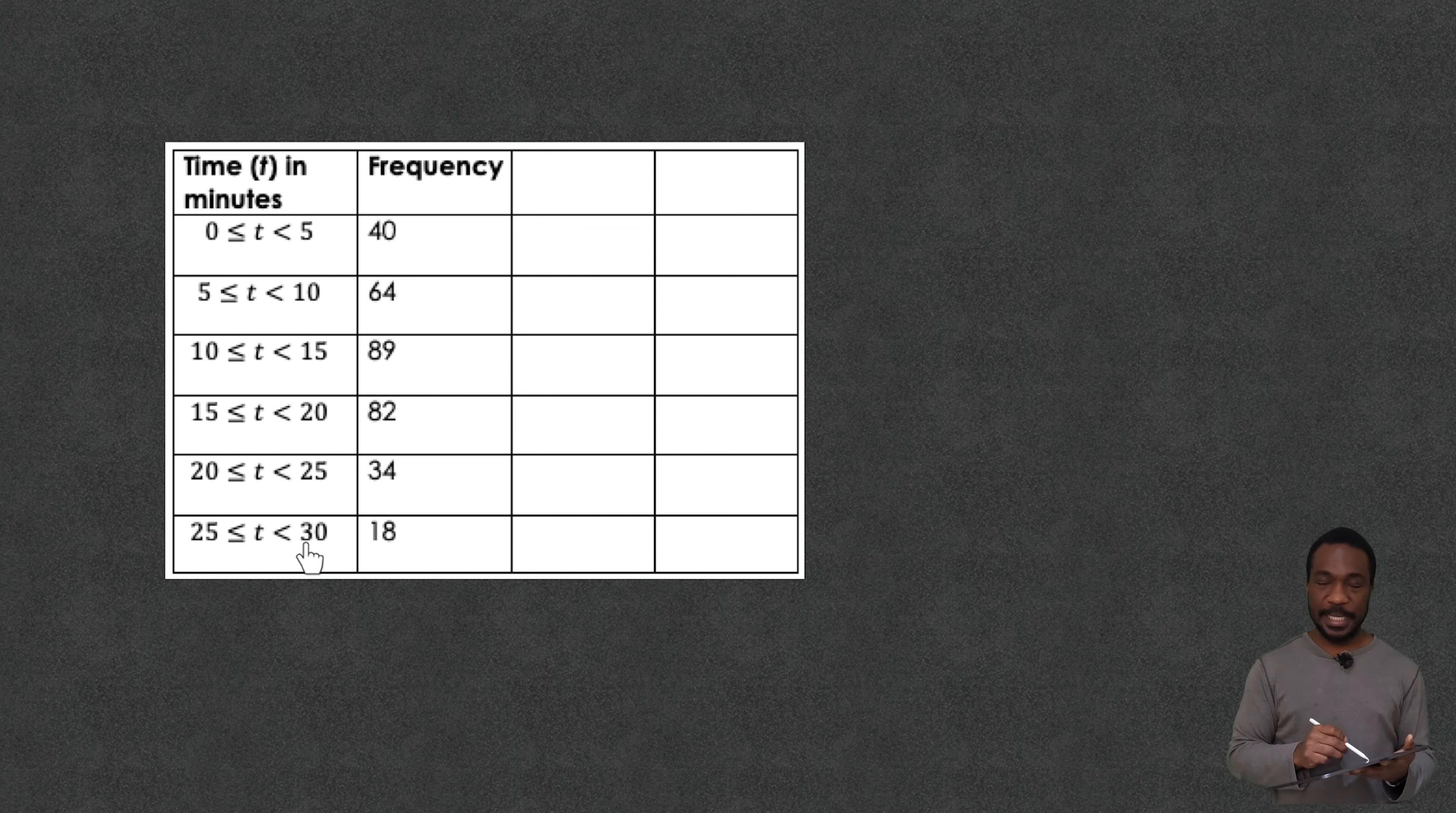Now this is called grouped data and that's because you've taken all the raw data, you put them into groups and then you say how many of them you saw there.